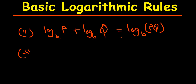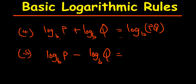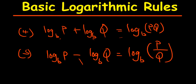The fifth rule involves subtraction and division. If I have log base B of P minus log base B of Q, this is the same as log base B of P divided by Q. Because we are subtracting, we divide P by Q.